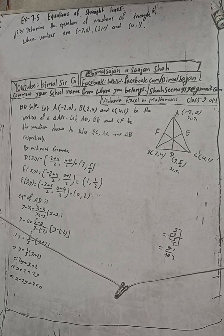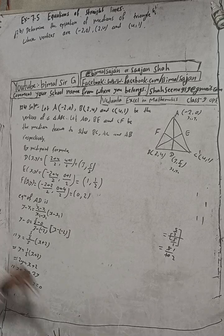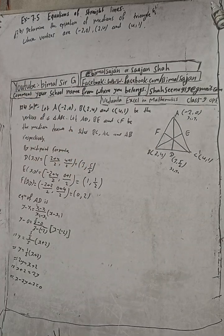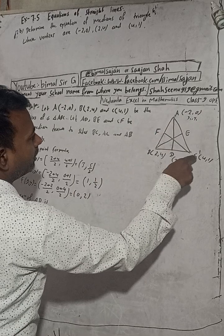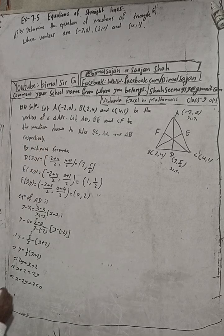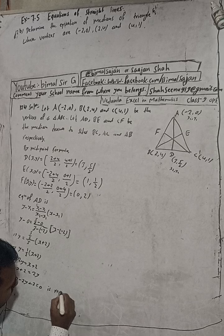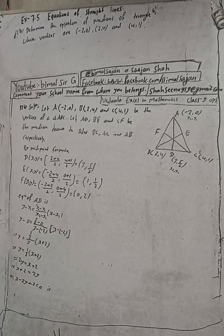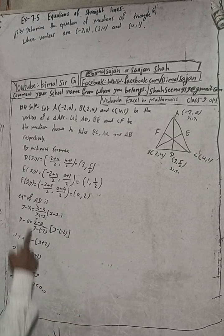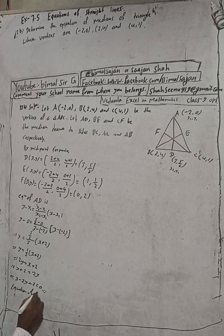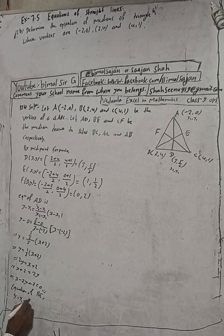Now we have two more equations to find. Equation of median BE: B = (2, 4) and E = (1, 1/2). Using the same formula: y - y1 = [(y2 - y1) / (x2 - x1)] × (x - x1), where X1, Y1 = (2, 4) and X2, Y2 = (1, 1/2).